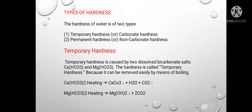Temporary hardness is caused by dissolved bicarbonate salts like calcium bicarbonate and magnesium bicarbonate. This hardness is called temporary because it can be removed easily by boiling. When calcium bicarbonate is heated, it gives CaCO₃ + H₂O + CO₂. Similarly, when magnesium bicarbonate is heated, it gives Mg(OH)₂ + 2CO₂.